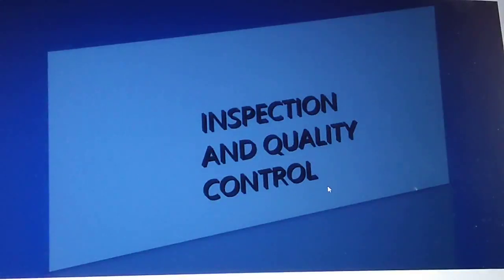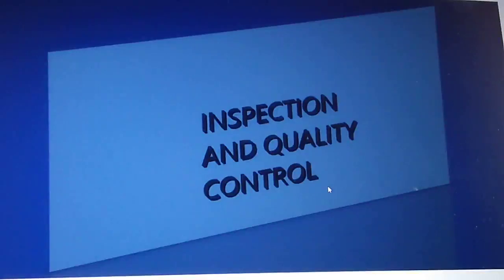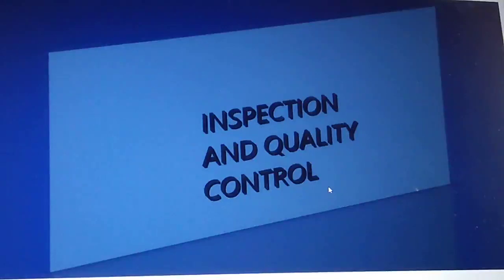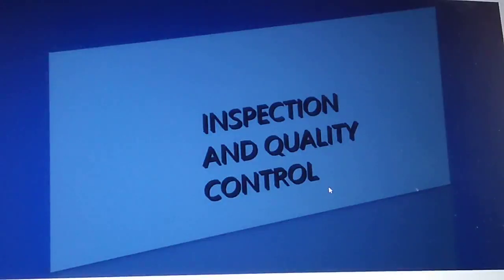Today we are going to discuss different sampling plans based on the number of samples inspected. This comes under the classification of inspection based on the number of samples. We have previously discussed that based on the number of samples inspected, it is divided into two types: 100% inspection and sampling inspection. Sampling inspection is further divided into four categories.